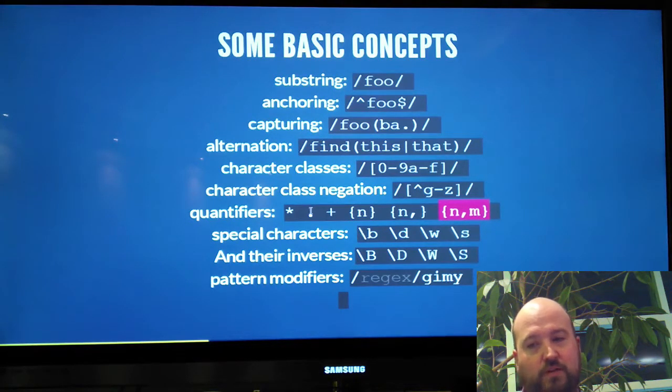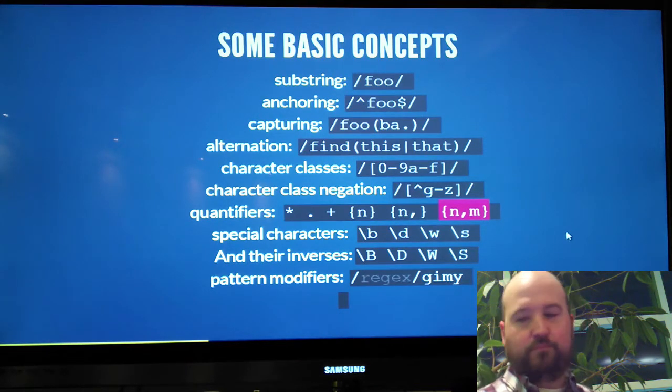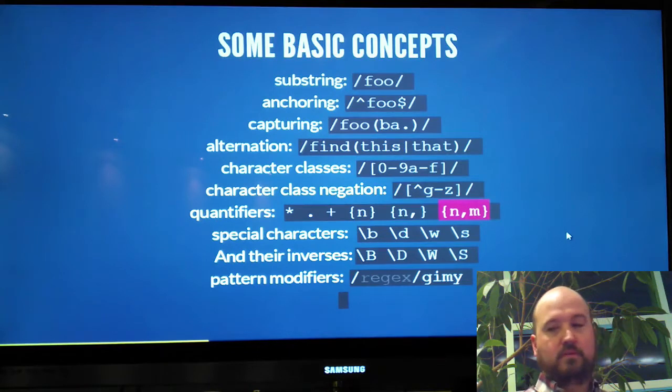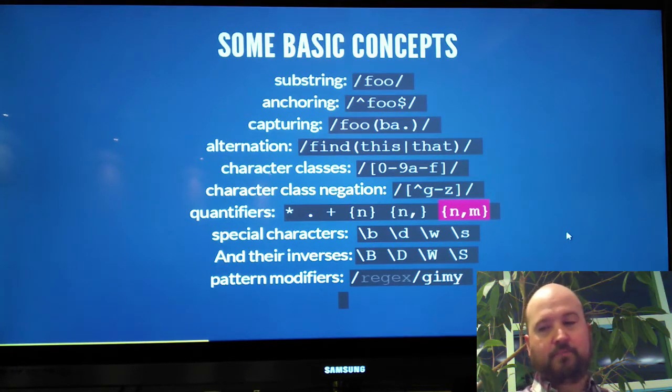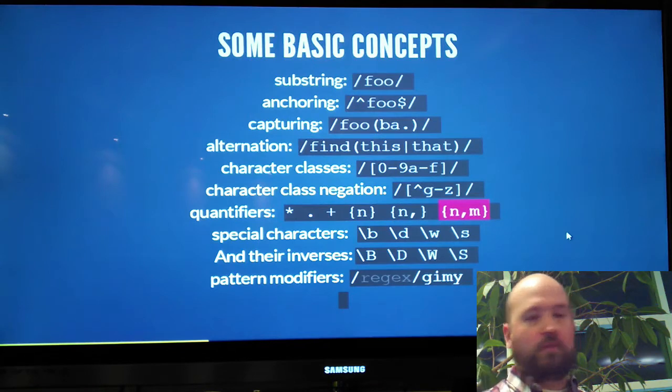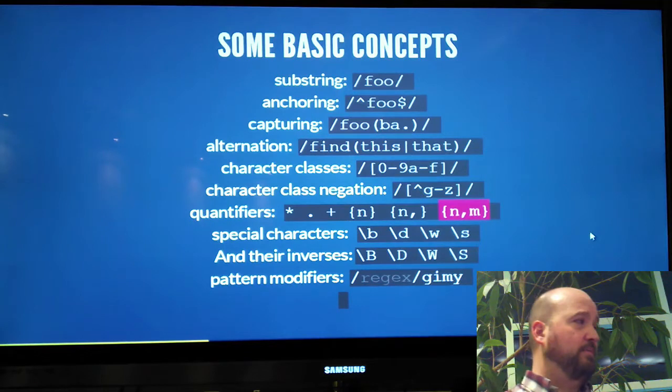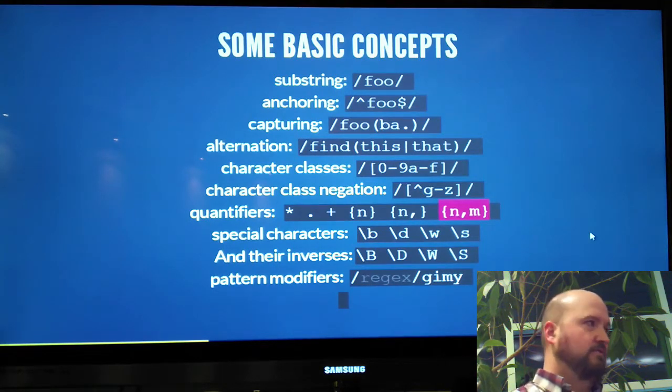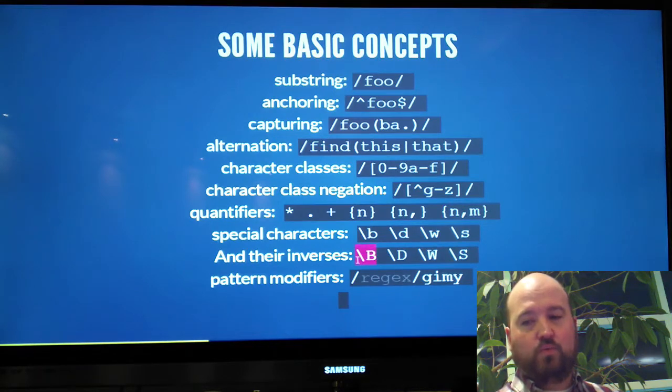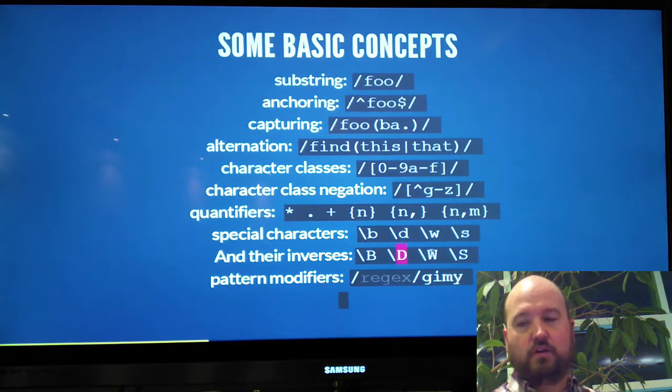The special characters, as Bryce pointed out, the dot should be under special characters. These are just some of them. We've got lowercase b, lowercase d, w, s, and their inverse. It represents a word break, a number, so a digit, zero through nine. W is a word character, so letters of the alphabet, and I think underscore. The backslash s is for a white space character, so that could be anything from a new line carriage return, tab, vertical line feed, and so on.